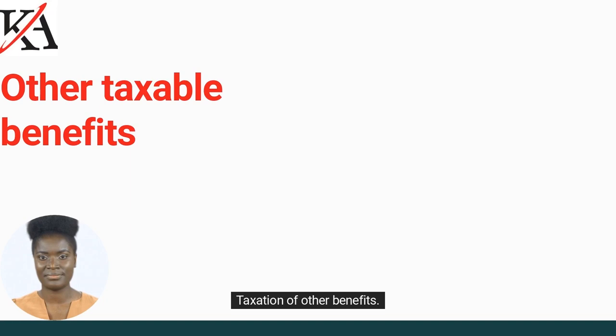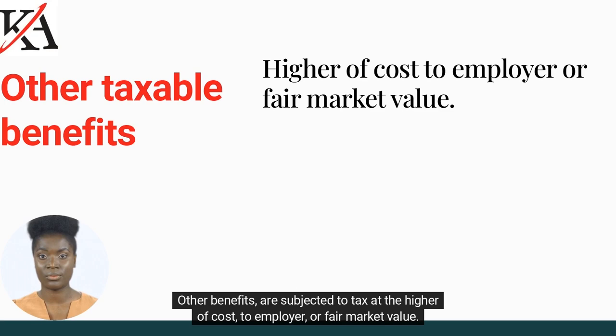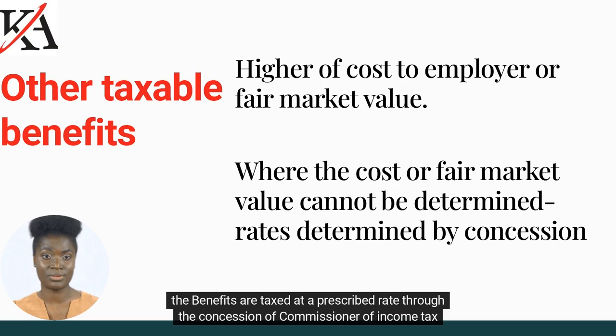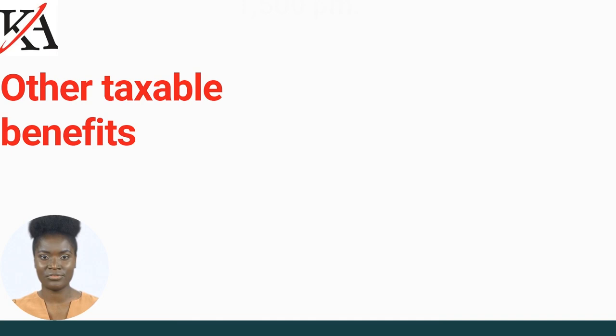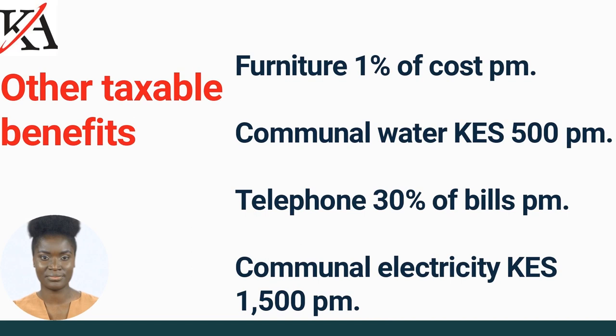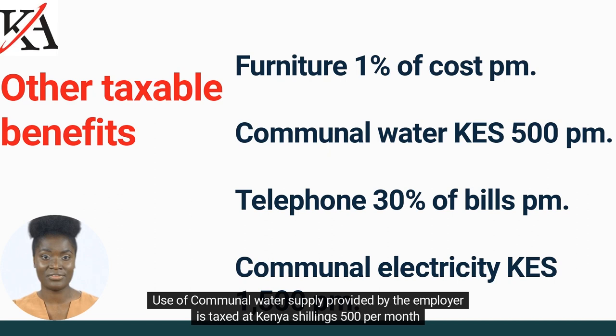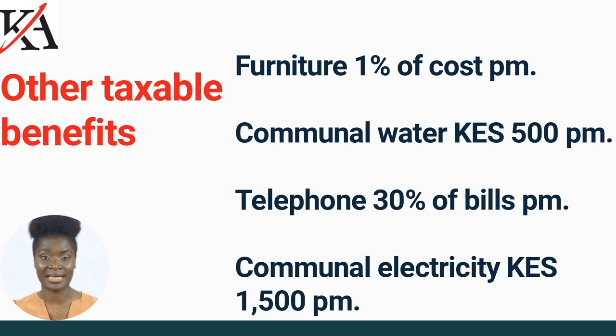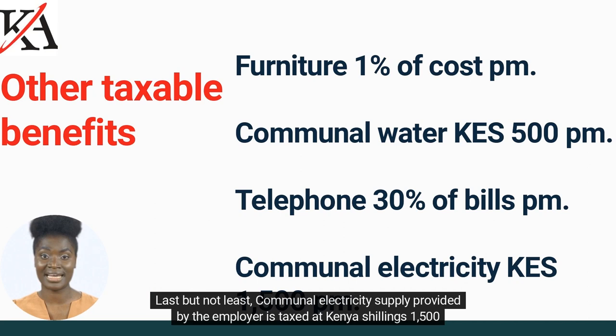Other benefits are subjected to tax at the higher of cost to employer or fair market value. Where the cost or fair market value cannot be determined, the benefits are taxed at a prescribed rate through the concession of the Commissioner of Income Tax. Furniture provided by the employer is taxed at 1% of the original cost per month. Use of communal water supply provided by the employer is taxed at Kenya shillings 500 per month. Telephone for personal use — whether landline or mobile — is taxed as a benefit at 30% of bills per month. Communal electricity supply provided by the employer is taxed at Kenya shillings 1,500 per month.